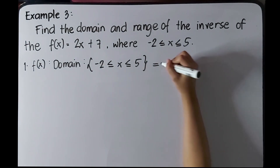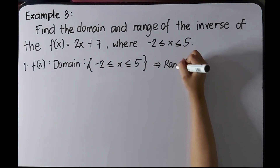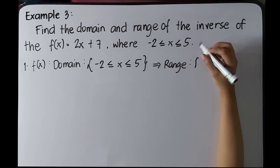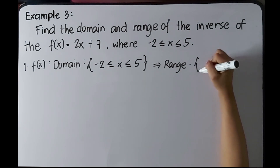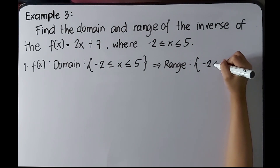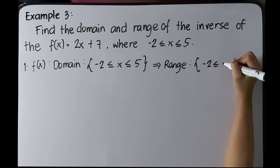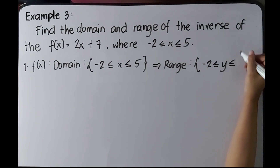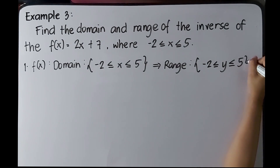So the range of the inverse function f⁻¹(x) is y such that y is greater than or equal to negative 2 and less than or equal to positive 5, i.e., −2 ≤ y ≤ 5. Now for the range of the original function, we evaluate with the given domain values.